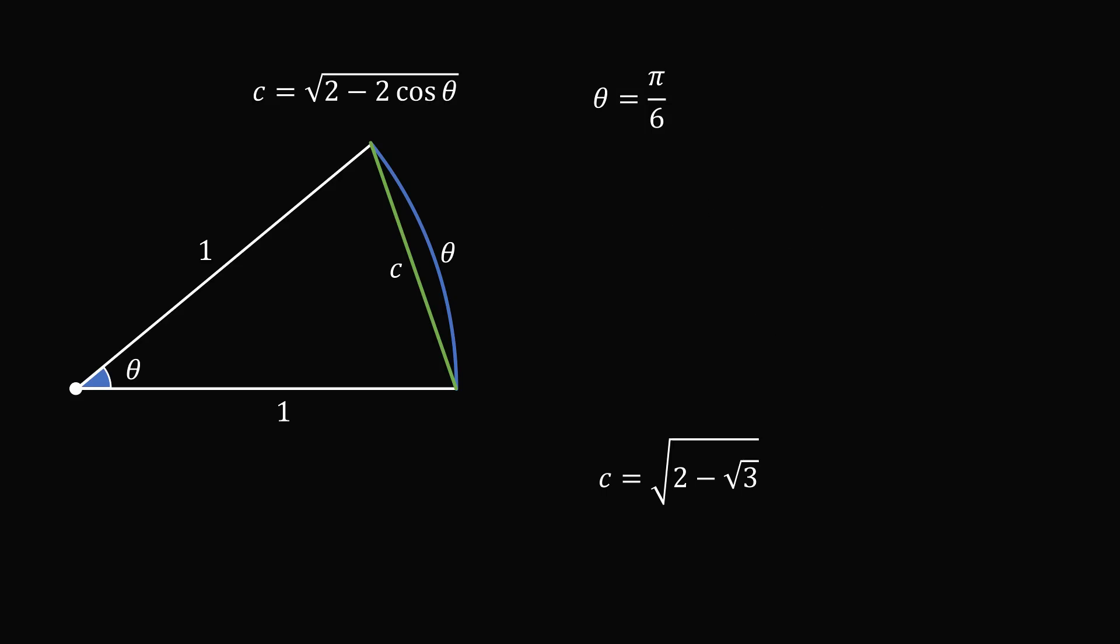So we know the value of theta, and we know the value of c. In the diagram of our construction, it is clear that c is less than theta, because c is a straight line segment between the two endpoints, and theta will be an arc. So theta must be larger than c. And therefore, in this case, we have shown that the square root of 2 minus root 3 is less than pi over 6.